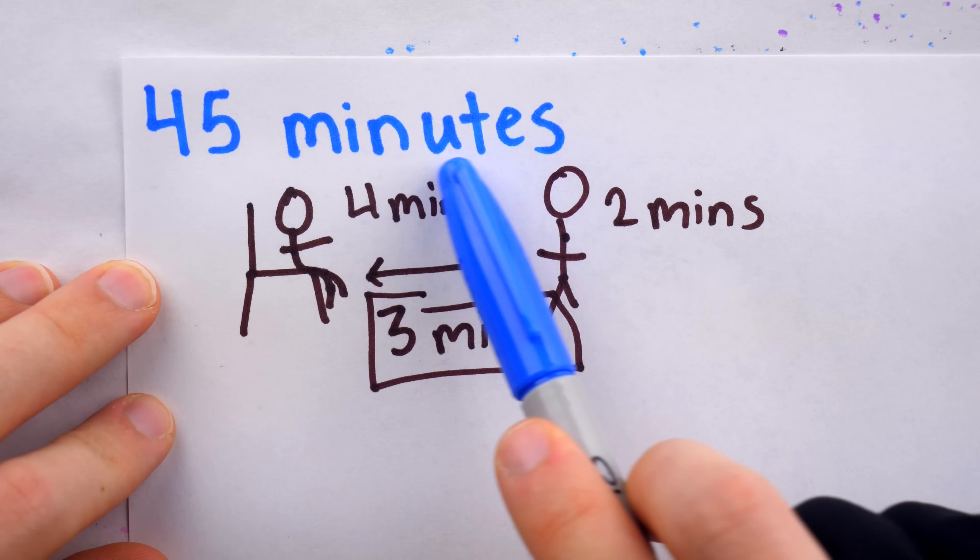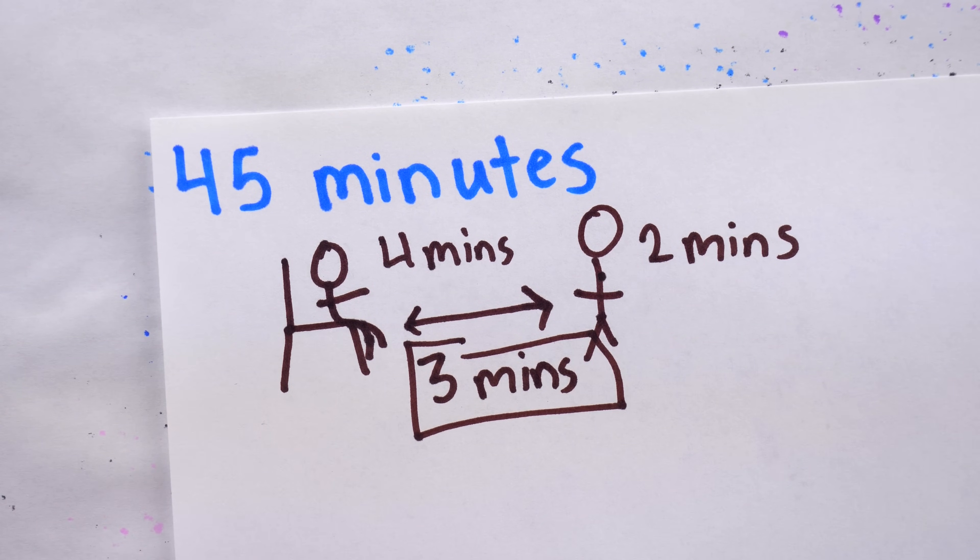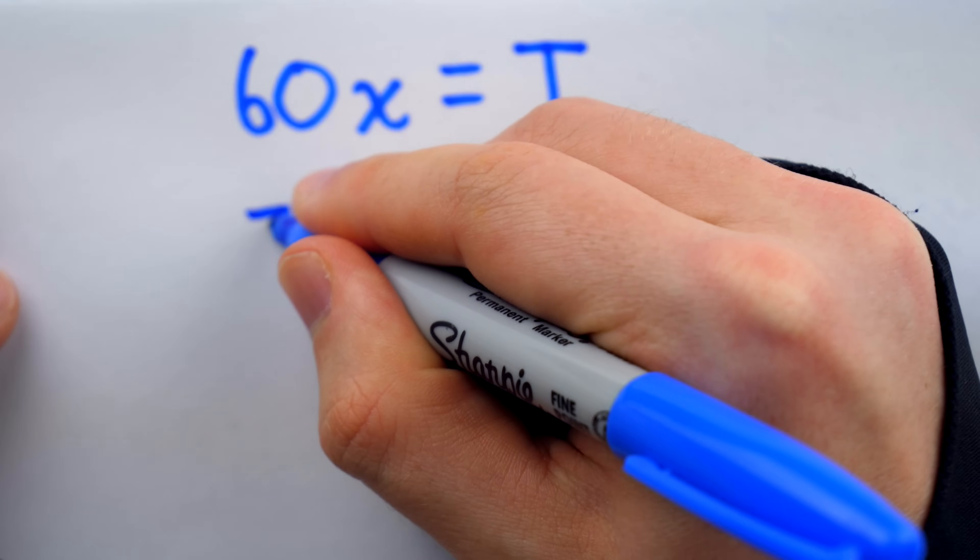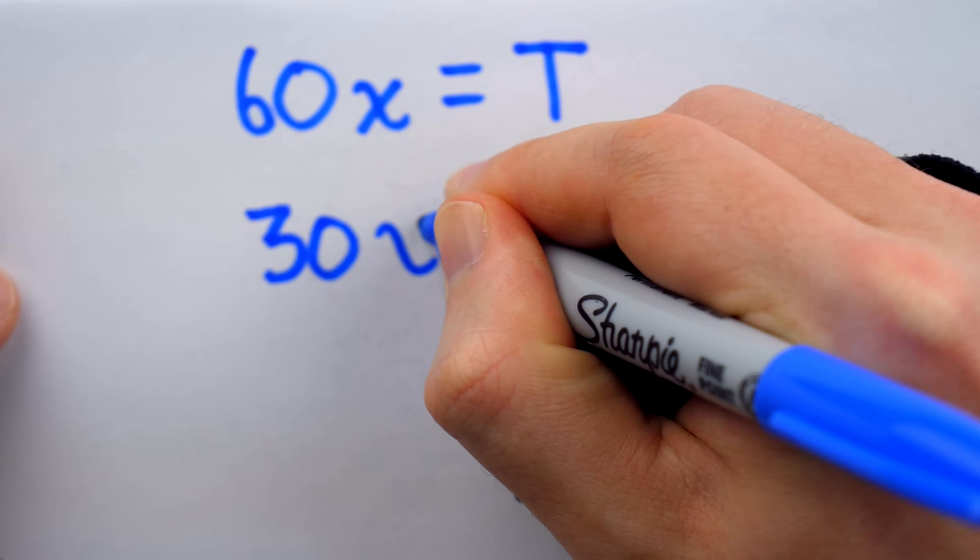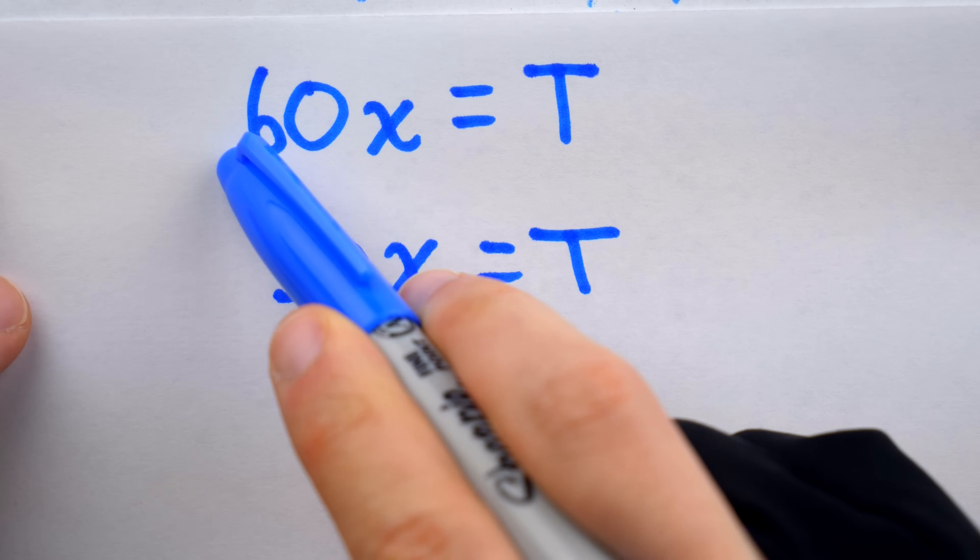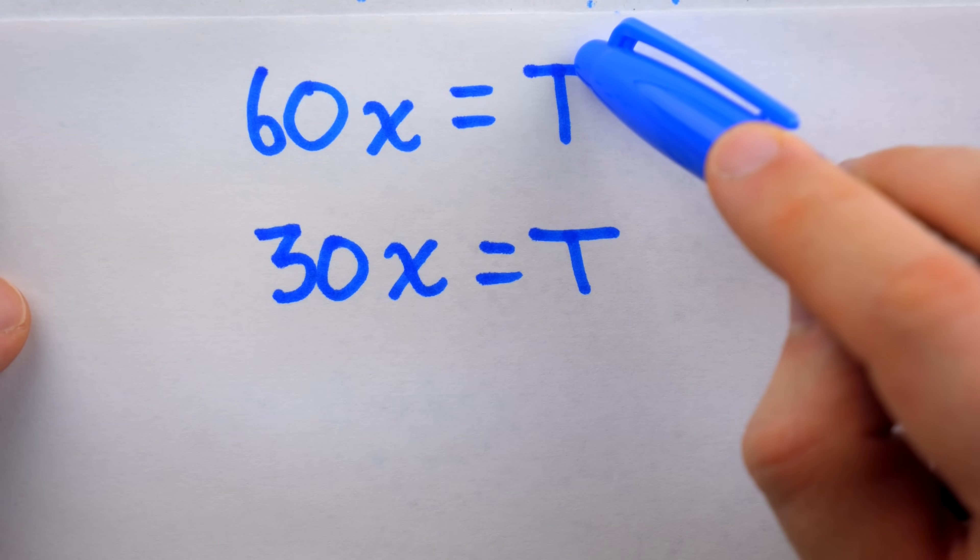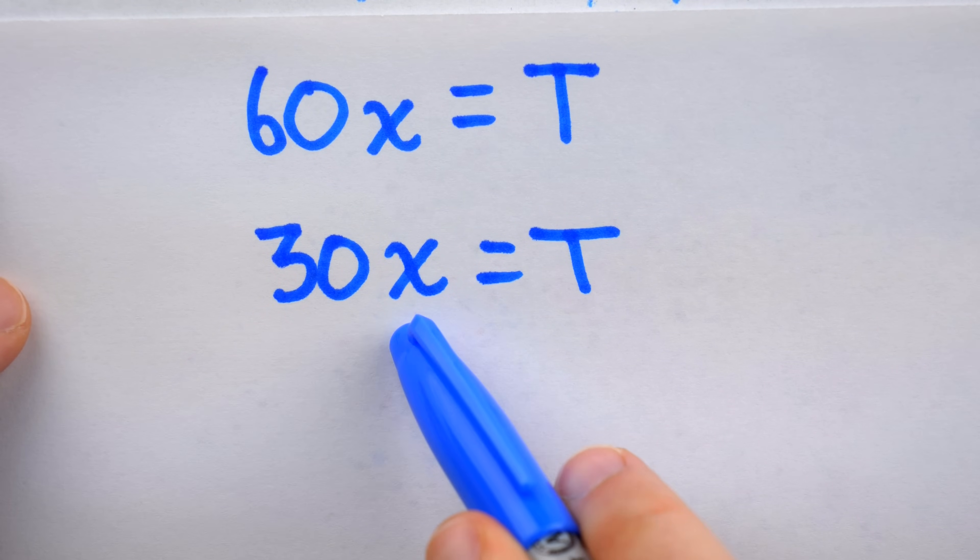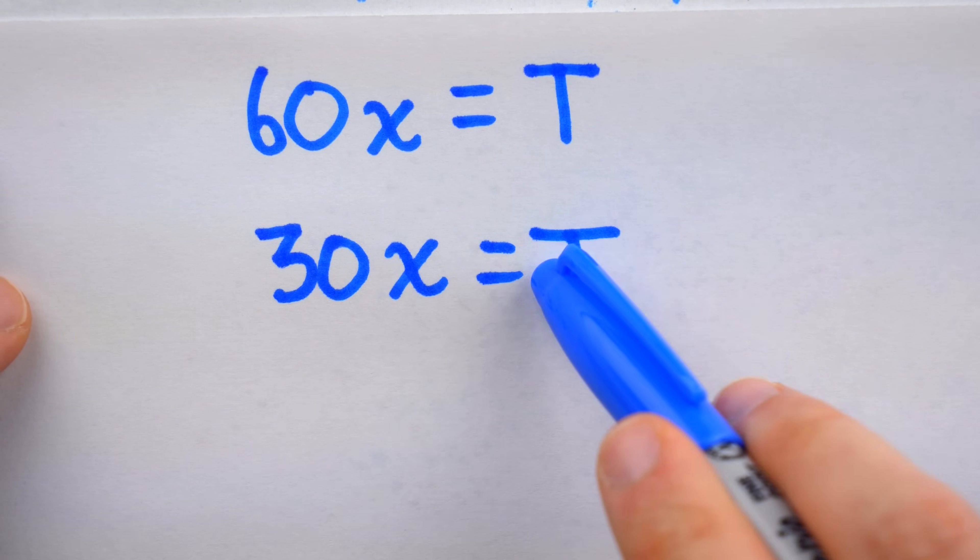So just on gut instinct, splitting the difference in saying 45 minutes feels reasonable. One could also just quickly see some equations in their head for this situation. 60 minutes of the hot faucet running will fill the tub, and 30 minutes of the cold faucet running will fill the tub.